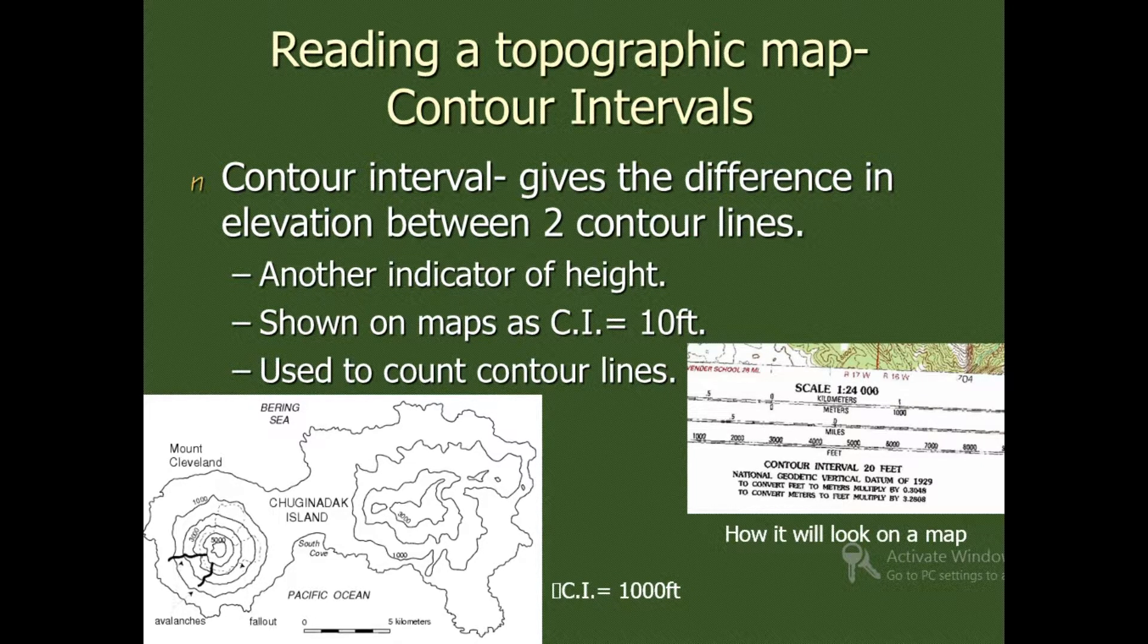Seeing the contours, we can say how a place is having elevation or whether it is flat or whether it has depression. A road will have equal elevation almost, so it will show flat, equal contour lines.